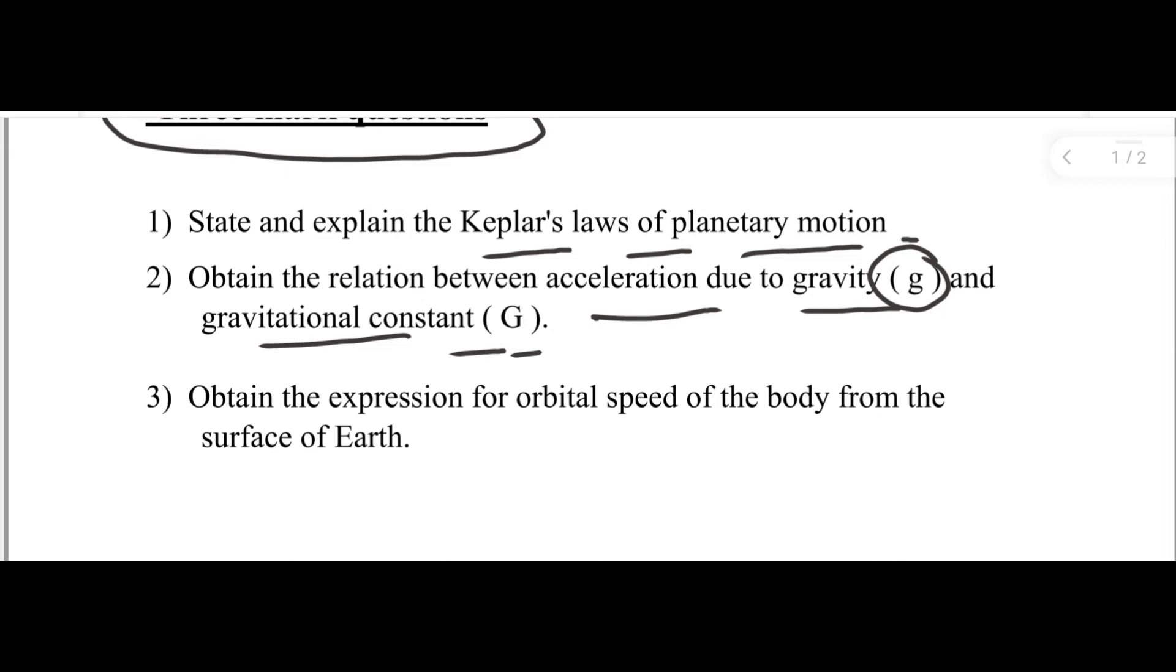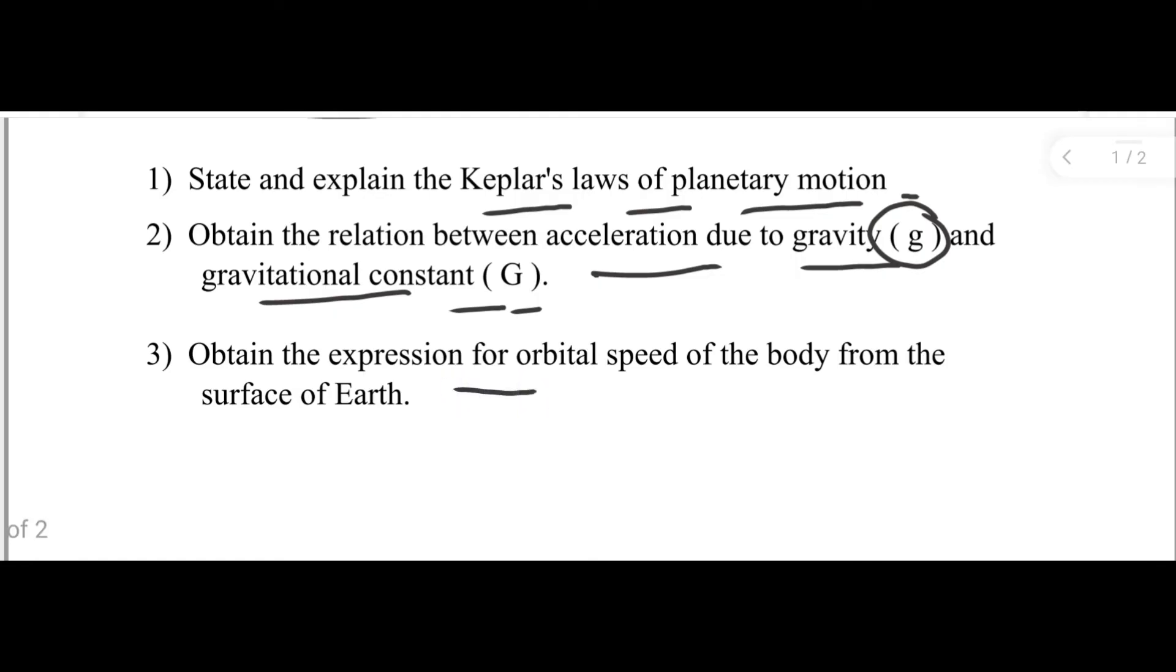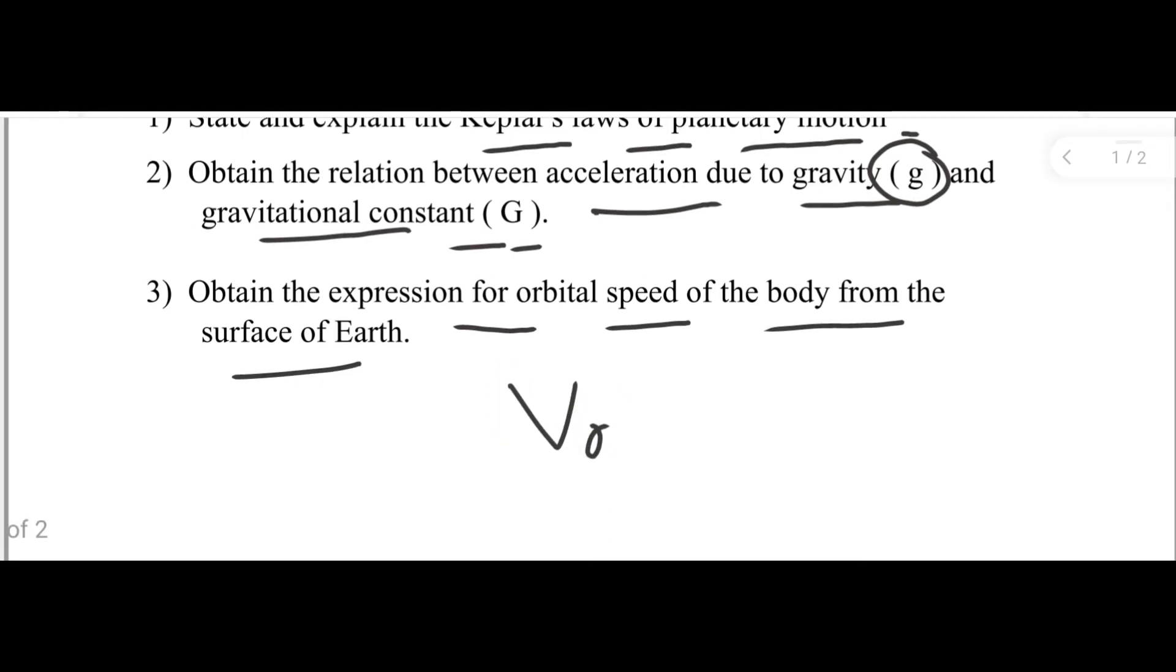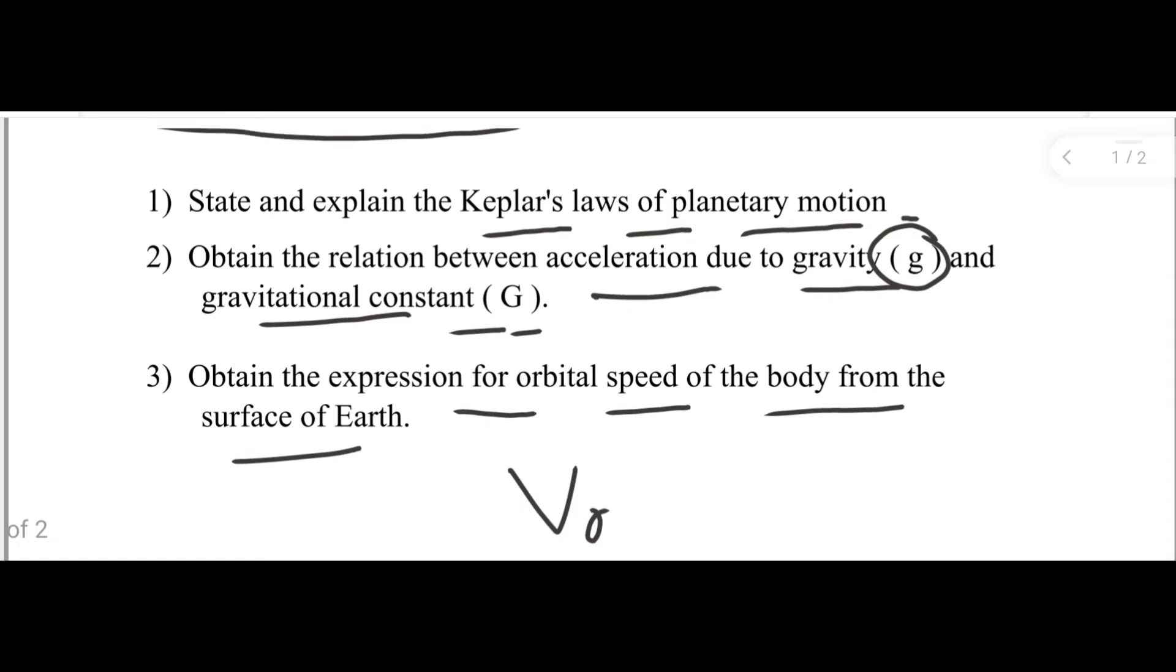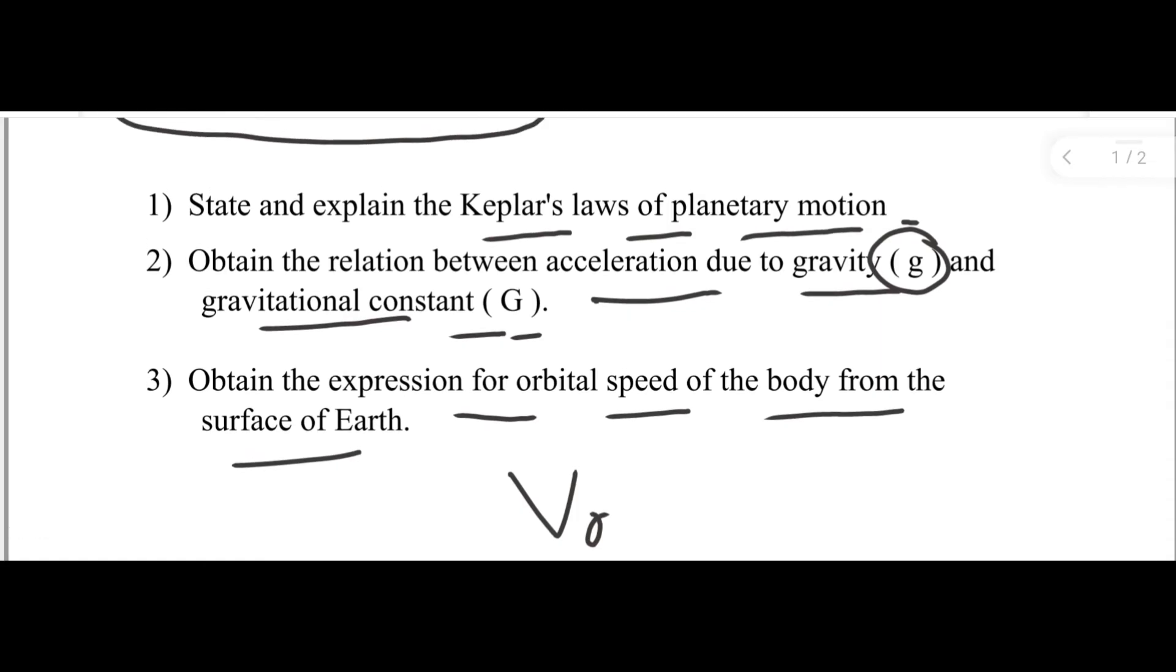Next question is, obtain the expression for orbital speed of a body from earth's surface. Orbital speed that is known as VO. These three are the important three mark questions.